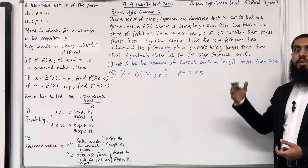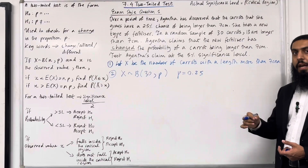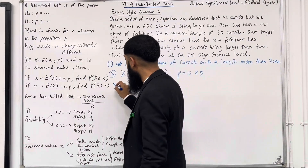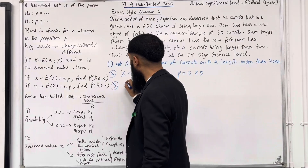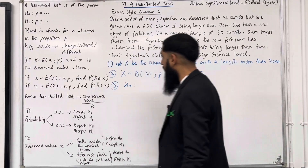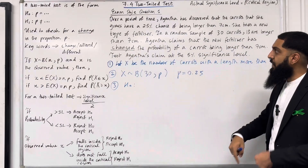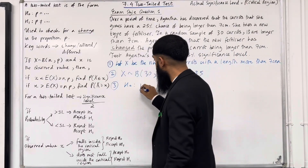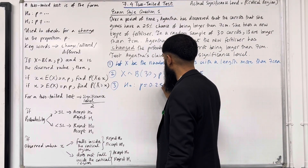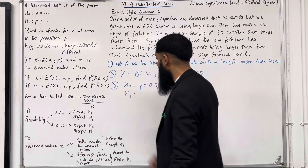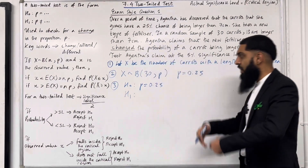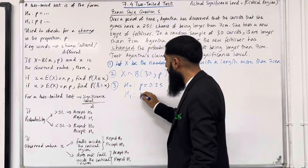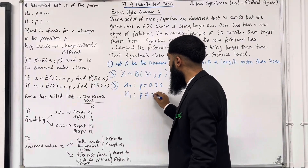Step 3: define the null hypothesis and alternative hypothesis. H0: P = 0.25 — this is the proportion we assume to be correct. H1: P ≠ 0.25 — we are assuming that the proportion has changed.